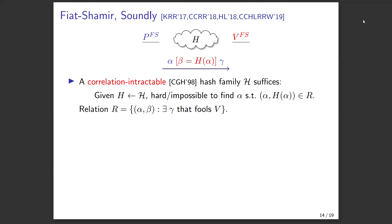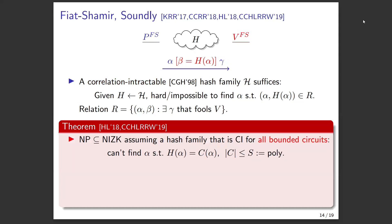Correlation intractability means: if you choose a hash function at random from a special family, it's hard to find an input alpha such that (alpha, hash(alpha)) is in some certain relation — the relation of pairs that complete a false proof. This is just another way of stating the soundness condition. A theorem shown by Holmgren and Marty, and then Canetti et al., gives NIZK proofs for any NP language if we have a correlation intractable hash family for all bounded circuits.